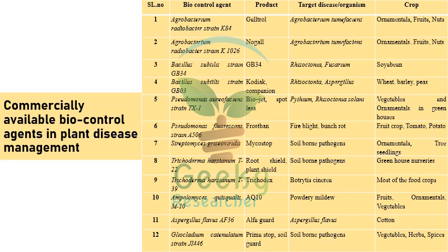Looking at commercially available biocontrol agents: Agrobacterium radiobacter strain K84 (trade name Galltrol) is recommended against Agrobacterium tumefaciens. K1026 (trade name Nogall or Digall) targets Agrobacterium tumefaciens. Bacillus subtilis strain GB34 has trade name GB34 and targets Rhizoctonia and Fusarium. Bacillus subtilis strain GB03, trade name Kodiak and Companion, is exploited against Rhizoctonia and Aspergillus.